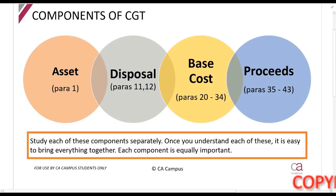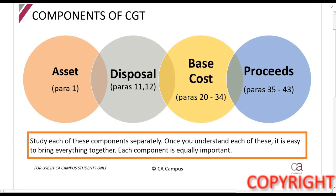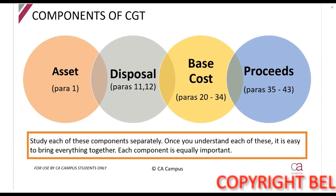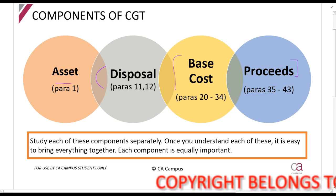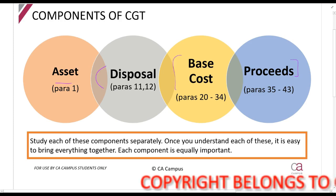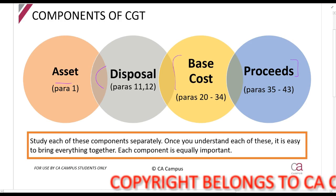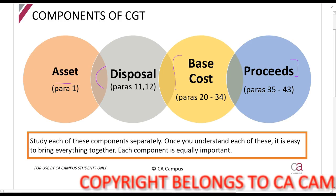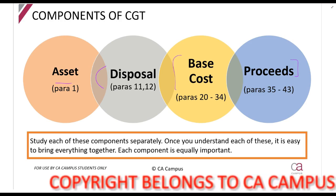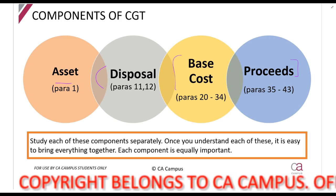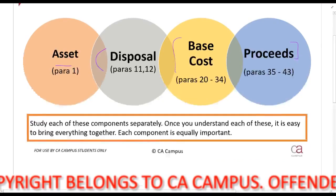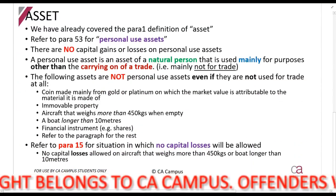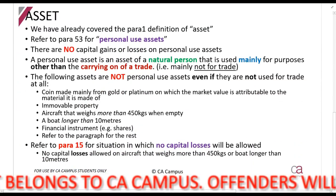CGT might seem a little bit overwhelming at first to study, but it's actually quite simple if you break it down into four components: assets, disposals, base costs, and proceeds. Study these sections in isolation, focus on what they are, because when you bring them together it really is just taking those individual sections and bringing them all together nicely into a calculation. So we're going to start talking about an asset first.